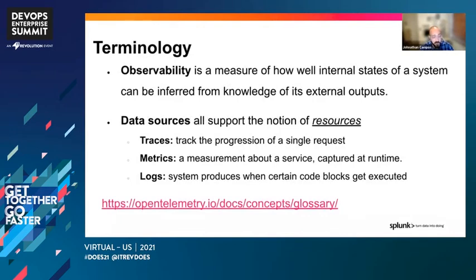Now let's take a look at some terminology. With observability, we look at it as the measure of how well internal states of a system can be inferred from knowledge of its external outputs — everything and anything that happens within the outputs of the different systems or microservices we're using. Some of the data sources we collect involve traces, which track the process of a single request; metrics, which are a measurement about a service captured at a given runtime; and logs, which are produced when certain blocks of code are executed. All of this data is important, and I invite you to check out the OpenTelemetry glossary for all the different terms used throughout the OpenTelemetry community.